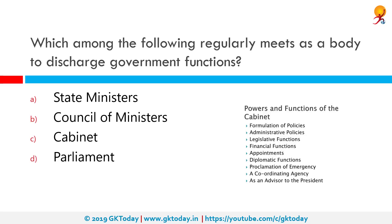Which among the following regularly meets as a body to discharge government functions? The correct answer is the Cabinet. The Cabinet holds powers and functions including formulation of policies, administrative policies, etc. Though legally the executive authority is vested with the President, in reality the Cabinet is the supreme national executive of India. The President always acts as per advice by the Prime Minister and his Council of Ministers, and all national and international problems confronting the country are tackled by the Cabinet. In fact, the Cabinet is the hyphen that joins and the buckle that binds the legislature with the executive.